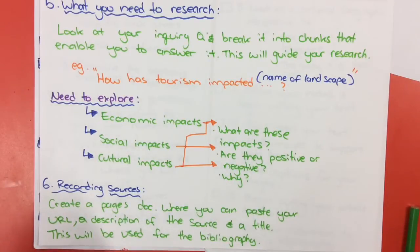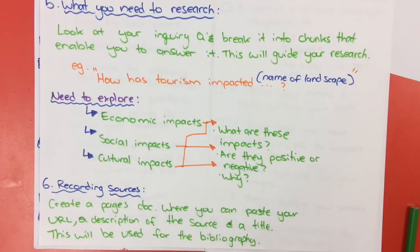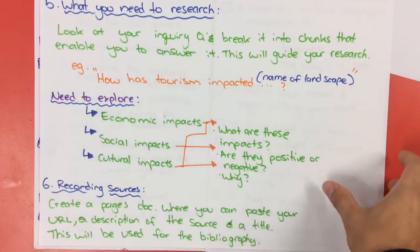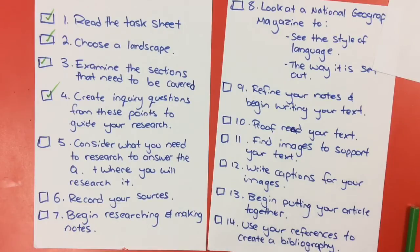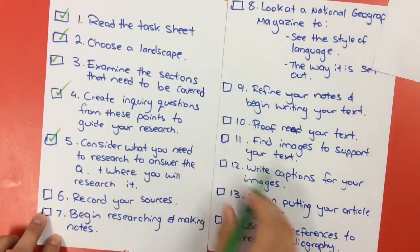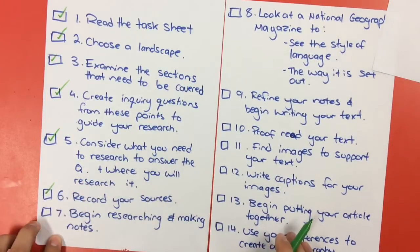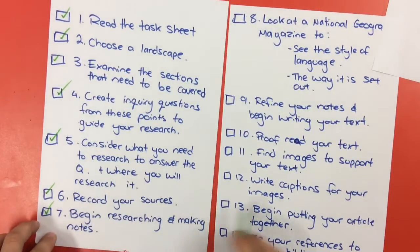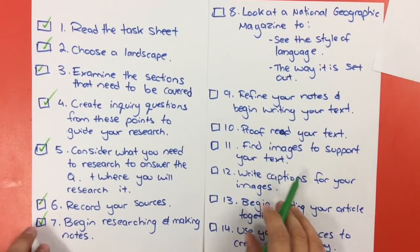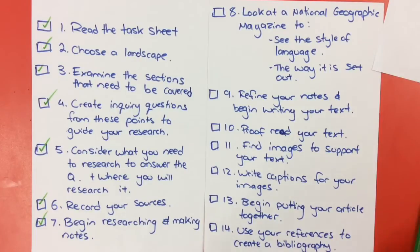When you're doing that research, make sure you keep a link or a URL of that website and paste it into a Pages document. Write a little description of that source and a title so you can refer back to that when you're creating your bibliography - that is a really important step. You can now begin by researching and making notes using a range of different resources, both online and maybe even text or hard copy as well. So begin your research.